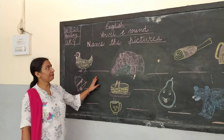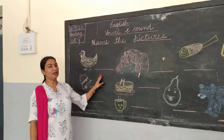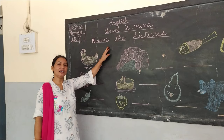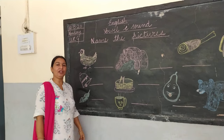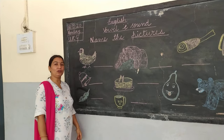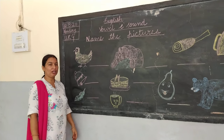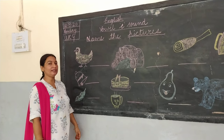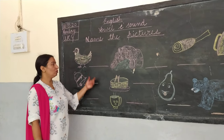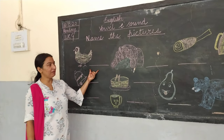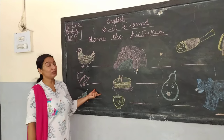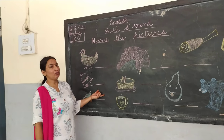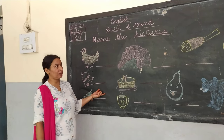Today in English we will learn the E sound. In our last class also we learnt the E sound with phonics. So today I have given pictures and you have to see each picture and then write the name of the picture.